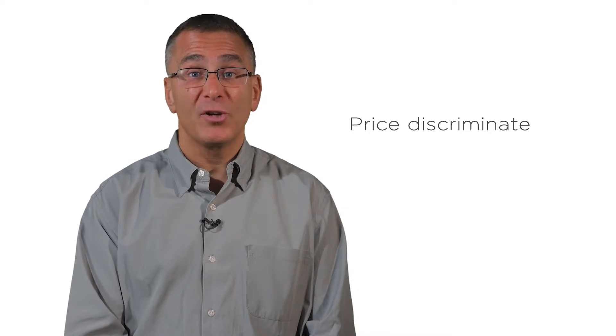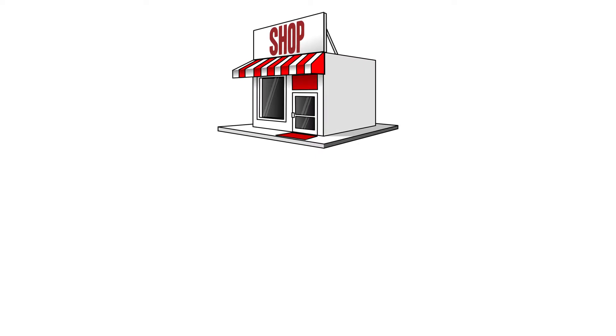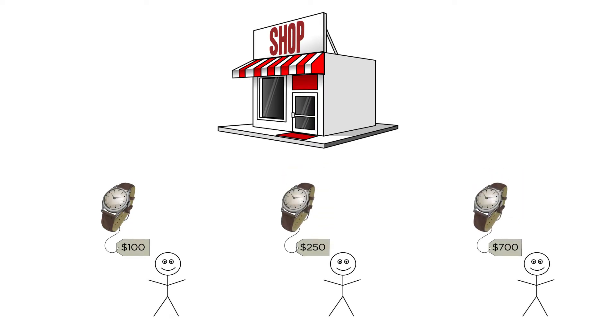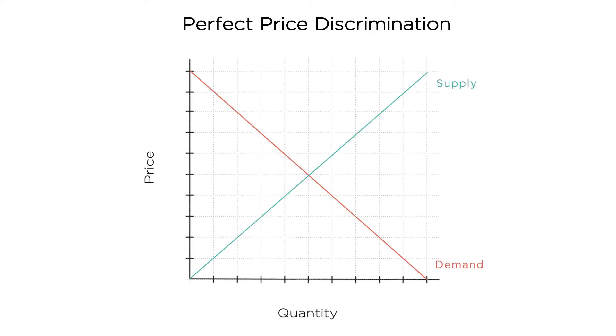But what if monopolists didn't have to charge just one price? What if they could price discriminate, charging different prices to different consumers? Let's start with an extreme case. Imagine the monopoly firm could perfectly price discriminate — it could charge a different price to every single customer. What would the firm do? It would charge each consumer a price exactly equal to that consumer's willingness to pay. This is clearly profit maximizing. If the firm charged any less to a given consumer, it would be getting less money from that consumer. And if it charged any more, the consumer wouldn't buy at all.